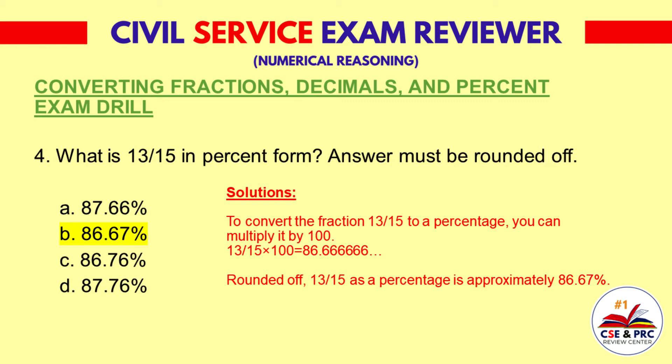Solutions: To convert the fraction 13 over 15 to a percentage, you multiply it by 100. 13 over 15 times 100 equals 86.66666. Rounded off, 13 over 15 as a percentage is approximately 86.67%.